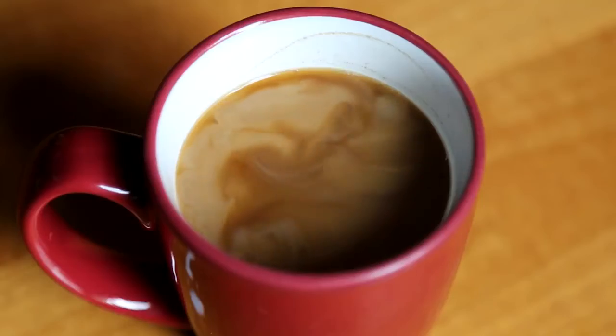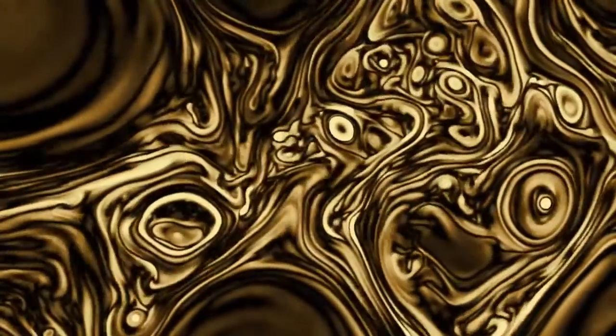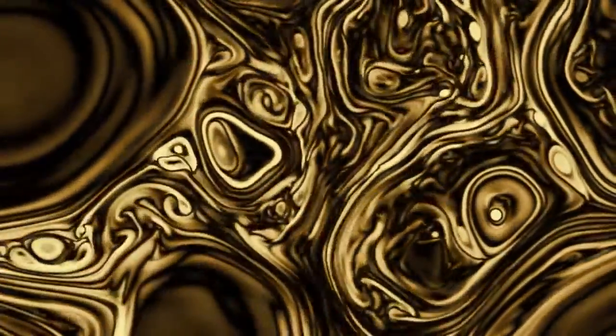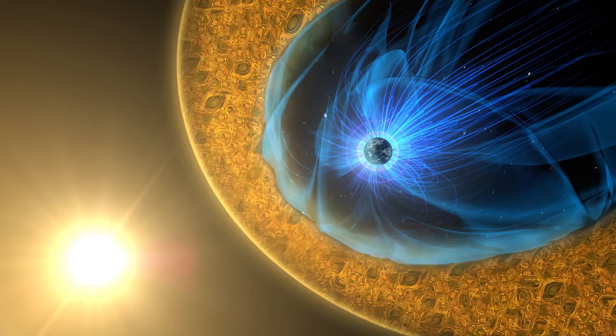Just like when you mix milk into coffee, turbulent plasma in space moves randomly and creates vortices. It can transport particles and energy but a lot is unknown about how these particles move through these regions.